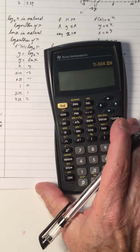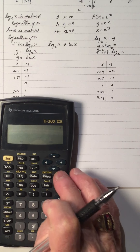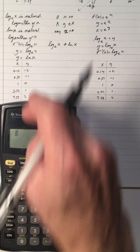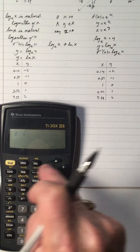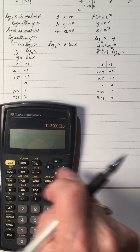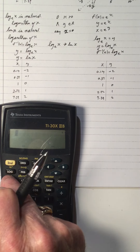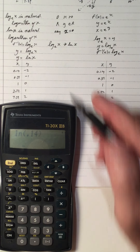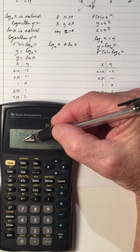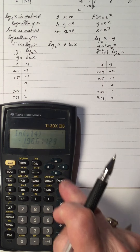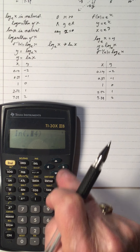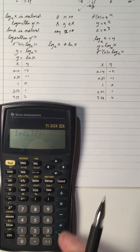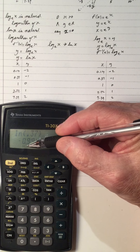Let me show you that on the calculator. So the LN of 0.14 gives approximately negative 1.966, which is close to negative 2. And LN of 0.37 gives approximately negative 0.1, et cetera. So instead of using LOG, you will see LN on the calculator.